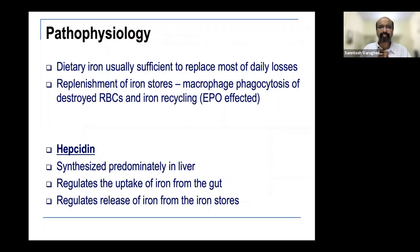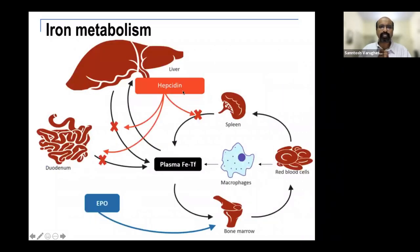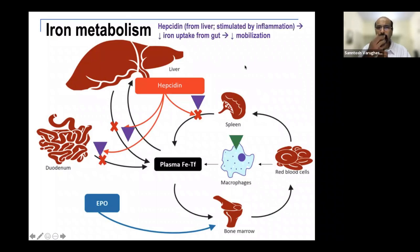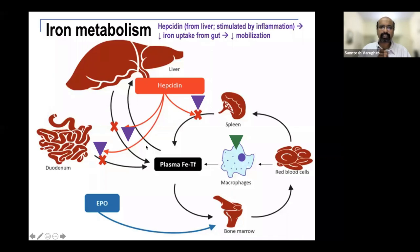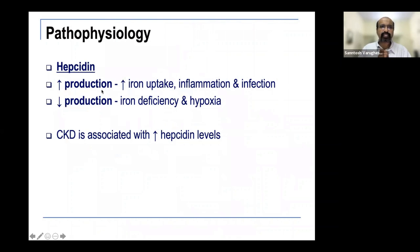There is an important molecule called hepcidin. Its predominant site of synthesis is the liver, and it regulates iron uptake from the gut as well as release of iron from body stores. Hepcidin decreases iron uptake from the gut, reduces iron mobilization, and reduces mobilization from the liver and spleen. Increased production of hepcidin occurs with increased iron uptake, inflammation, and infection — and vice versa. CKD is associated with increased hepcidin levels.